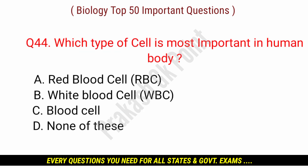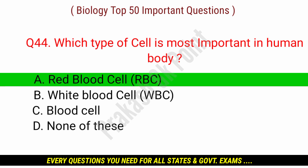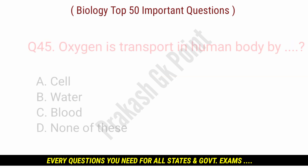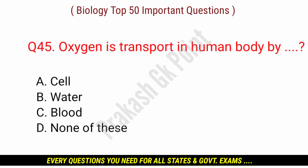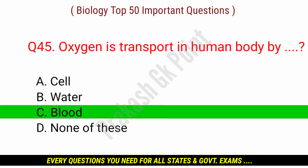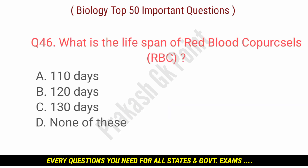Which type of cell is most important in the human body? Answer: option A — Red blood cell, RBC. Oxygen is transferred in the human body by? Answer: option C — Blood.